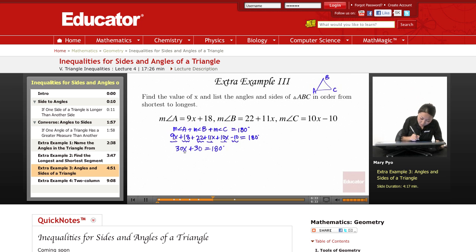I'm going to subtract 30. So 30x equals 150. And then when I divide by 30, x is going to equal 5. So that's not the end of the problem.